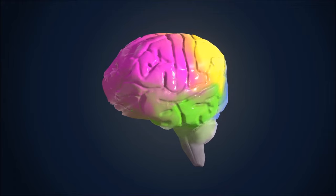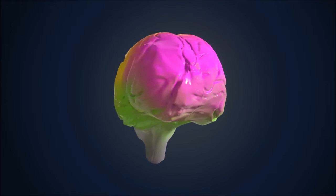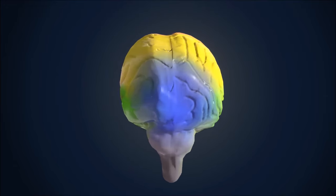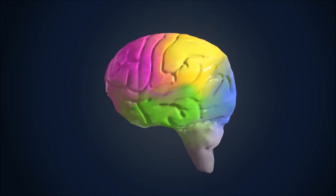The occipital lobe is the brain's visual center. It processes visual information received from our eyes, allowing us to understand what we see and its meaning. Without this lobe, we wouldn't be able to see the sunrise and sunset.